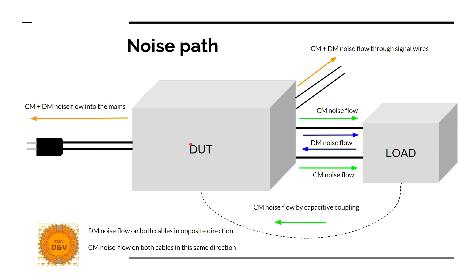Differential mode noise flows on both cables in a positive direction. The amplitude of this current will be affected by frequency of the signal, amplitude of the current, and inductance in this loop. Regarding common mode noise, it flows through both cables in the same direction, then by capacitive coupling and back.